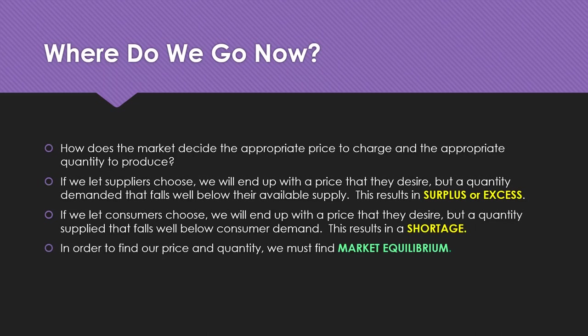If we let suppliers choose, they're going to charge as high a price as they possibly can, because their goal is to make as much money as possible. If we let suppliers dictate the price — which in a way they do, through market research and focus groups — let's say they charge $1,000. The problem is there were only 500,000 units demanded at $1,000 per television, and there were 2.5 million units they were willing to supply.